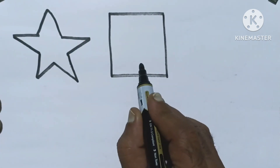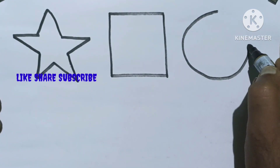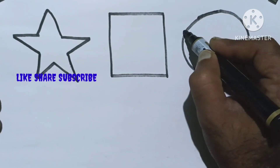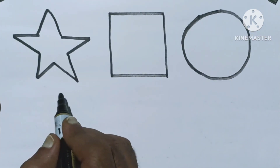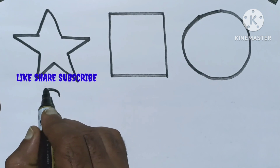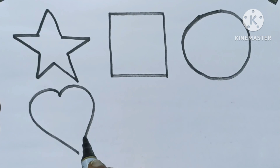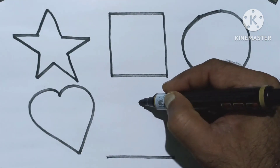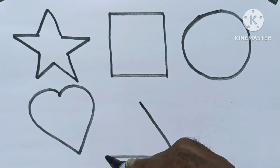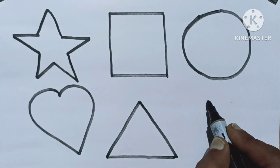Square. Circle. Circle. Heart. W, X, Y, and Z — now I know my ABCs, now I'm home to be with me. Heart. Triangle. Triangle. Hexagon.